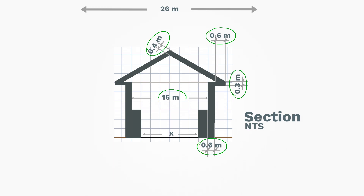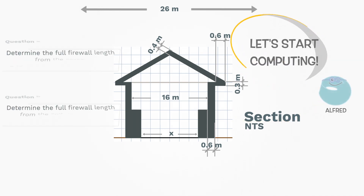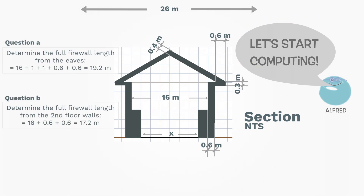Now we can add the offsets we've established from the walls and eaves to get the unknowns. For the first question, we have to add the 1-meter eave and the 0.60-meter firewall requirement offsets on both sides to the width of the second floor. Now we know that the longest length of firewall from the eaves is 17.2 meters. For the second question, we have to add the 0.60-meter firewall requirement offsets on both sides to the width of the second floor. Now we know that the longest length of firewall from the second floor walls is 17.2 meters. Pretty straightforward, isn't it?